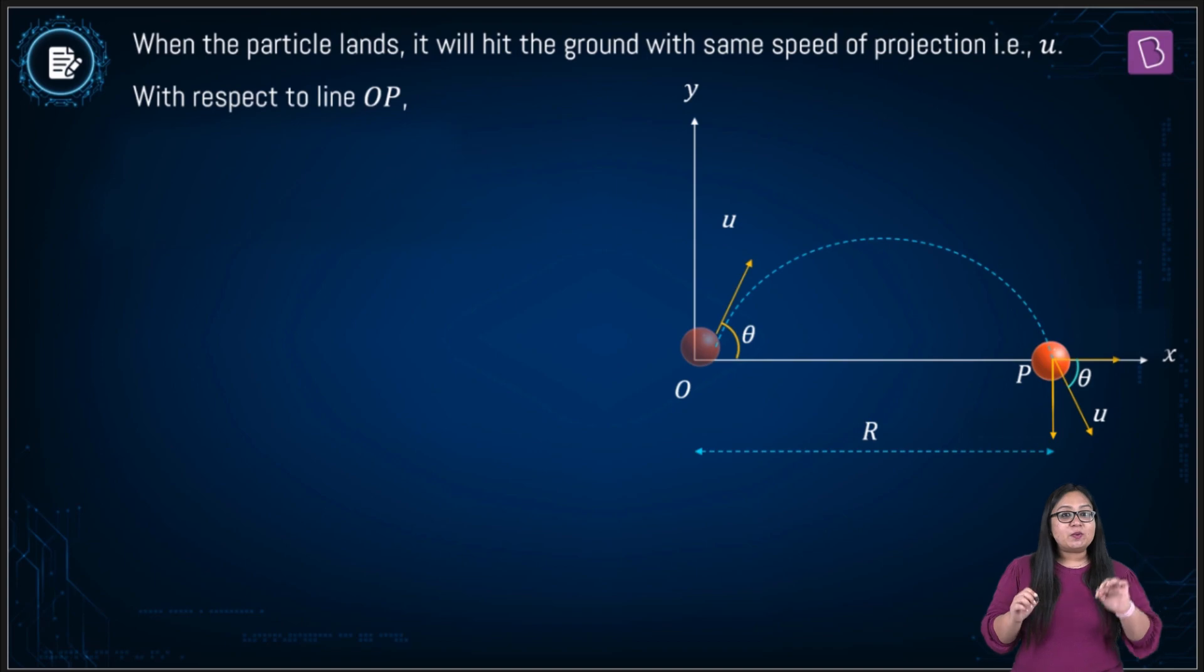Now we want to calculate its angular velocity taken from the point of projection at the time of landing. So our vector will be o to p, which is op vector, magnitude is equal to range. So it's a horizontal vector of magnitude range.